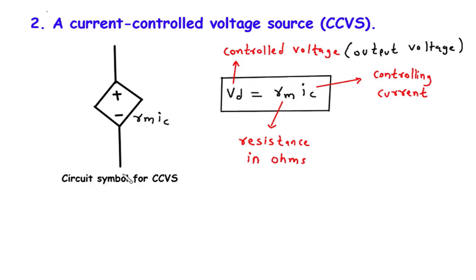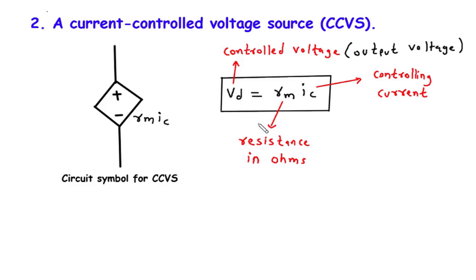To visualize a CCVS, it is often represented by a diamond-shaped block in circuit diagrams with two terminals. This symbol is crucial in recognizing and differentiating the CCVS from other circuit elements. The relationship between the controlling current IC and the voltage across the CCVS VD can be expressed according to the CCVS equation as VD equals RM into IC. Here, VD represents the controlled voltage, and IC denotes the controlling current. The proportionality constant RM is the resistance in ohms associated with the CCVS.